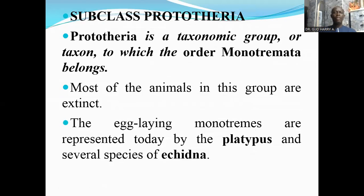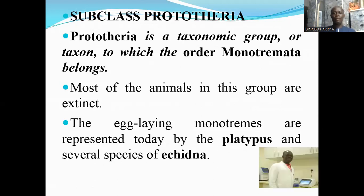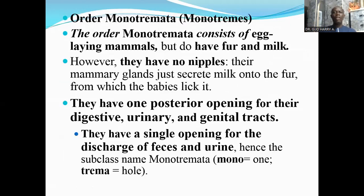The subclass Prototheria is a taxonomic group or taxon to which the order Monotremata belongs. Monotremata is the only extant order in the subclass Prototheria; most of the animals in this group are extinct. The egg-laying monotremes are represented by the platypus and several species of echidna.